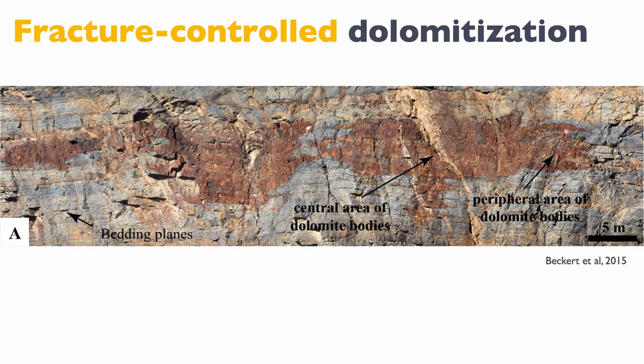Let's look in detail at the study done on Wadi Sartan. Here is a picture showing the distribution of limestone in blue, early dolomite at the top with a grayish-brownish color, and the late dolomite, which is extremely easy to spot. We have some chimneys that look like fractures, but also some interesting shapes that look more like cavities than fractures.